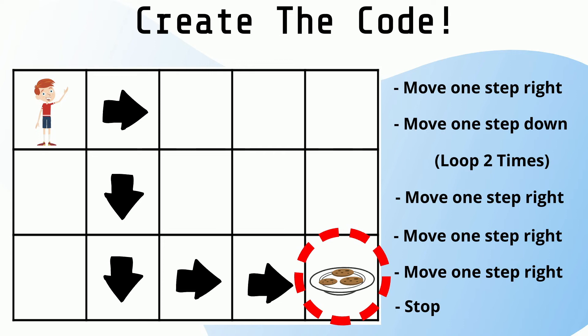Next, I will need to move three steps to the right. I can add another loop there to make the code repeat three times. Finally, I will need to stop. Yay! I now have my cookies. Thank you for writing the code.